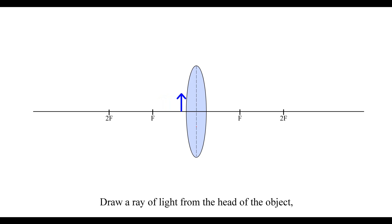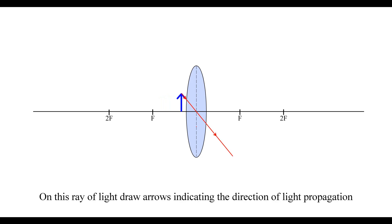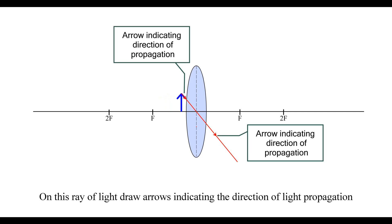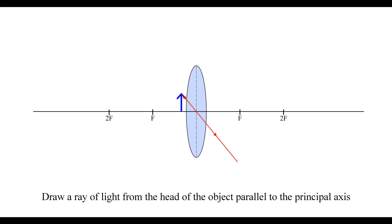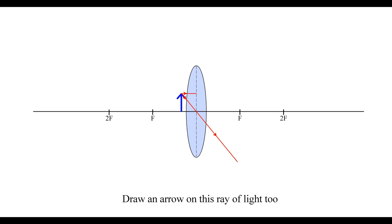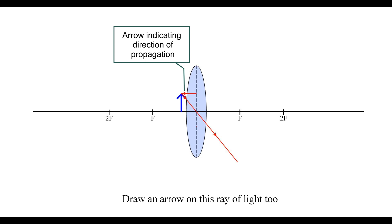Draw a ray of light from the head of the object through the optical center of the lens without refraction. On this ray of light, draw an arrow indicating the direction of light propagation. Draw a ray of light from the head of the object parallel to the principal axis, and draw an arrow on this ray of light too.